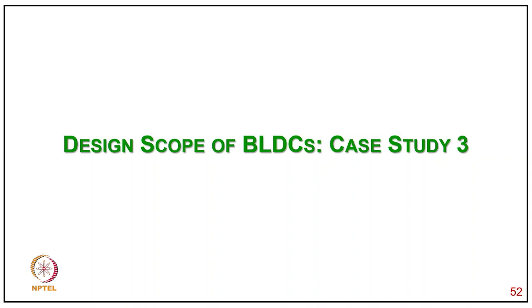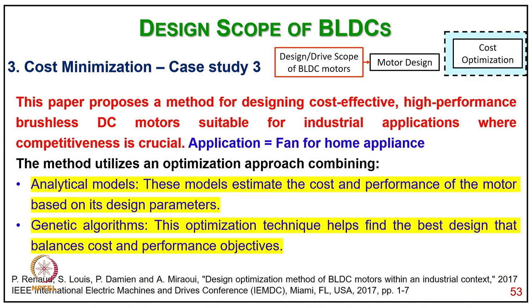Coming to case study 3 on cost optimization: this work proposes a method for designing cost-effective, high-performance brushless DC motors suitable for industrial applications where competitiveness is crucial. The application is a fan for home appliances. The method applies an optimization approach combining an analytical model — which estimates the cost and performance of the motor based on design parameters — and genetic algorithms, which help find the best design that balances cost and performance objectives.